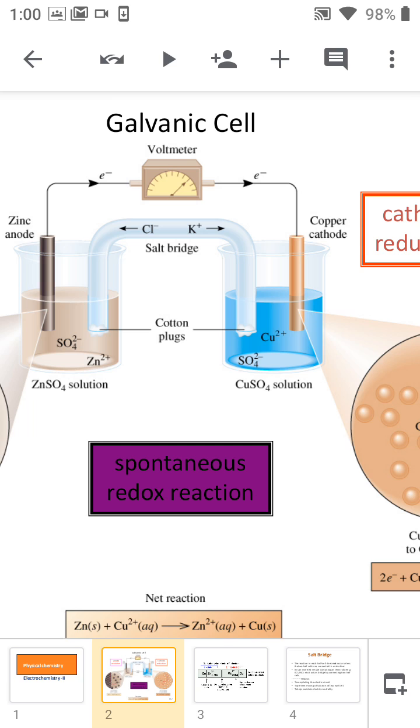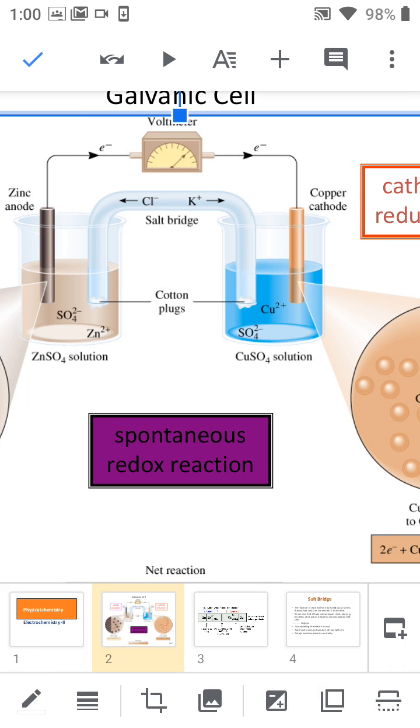In a galvanic cell, we can see that one electrode is zinc, and the zinc rod is dipped in the aqueous solution of zinc sulfate. The other electrode is the copper electrode, and the copper electrode is dipped in copper sulfate solution.